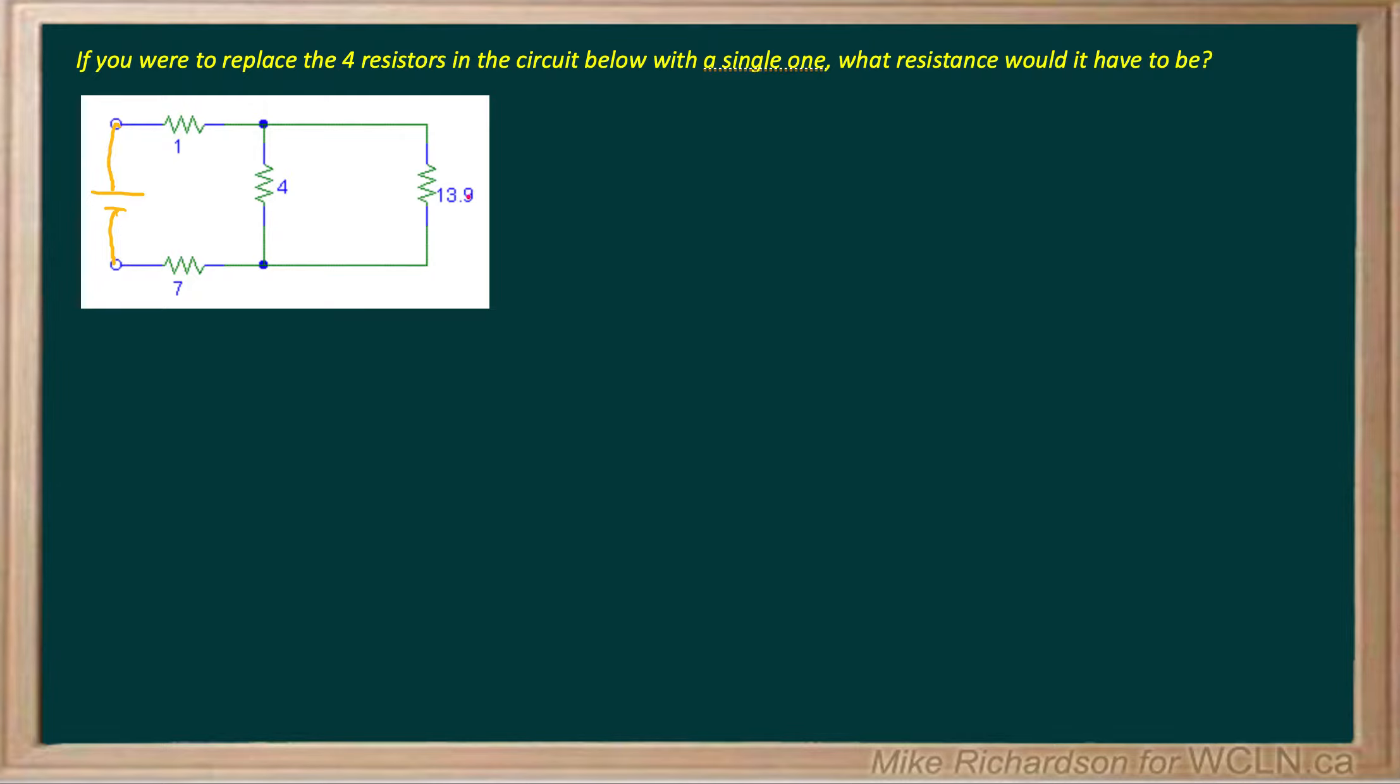So I've got this 4 and this 13.9, and you'll notice the top ends are both connected together, as are the bottom ends. There's a direct path from the bottom of the 13.9 to the bottom of the 4. So we say that those two resistors are across one another, so they're in parallel.